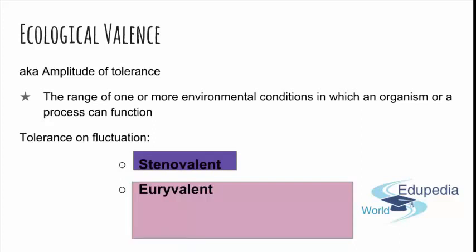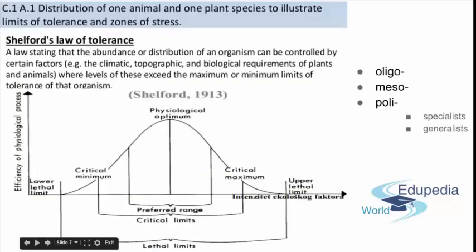Dependent on tolerance, there are two main groups: Stenovalent and Eurivalent. Stenovalent are the ones with a really narrow tolerance level, while Eurivalent are species that are comfortable in a wider range of property changes. For example, Stenovalent would be rainforest species that are only comfortable living in that type of temperature and moisture, while Eurivalent would be some species able to live anywhere in the world because they tolerate a wide range of temperature change. This is described by Shelford's Law.